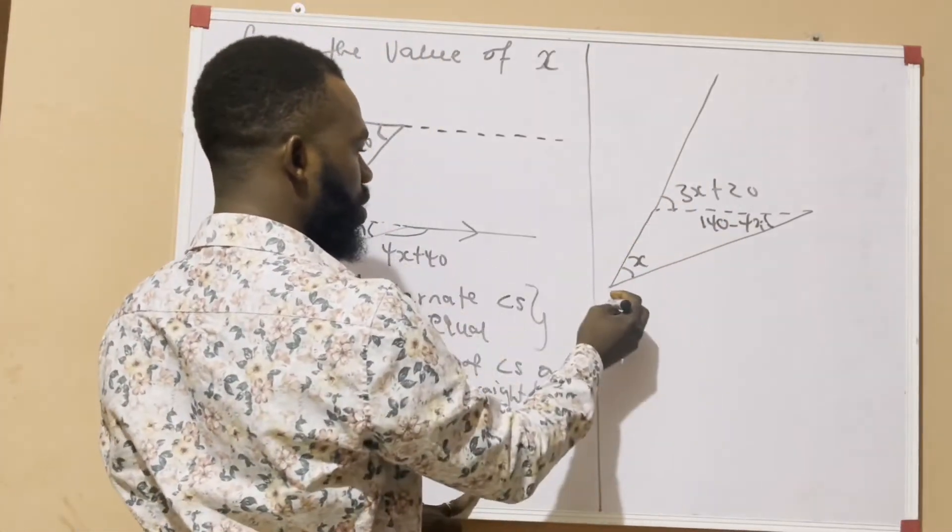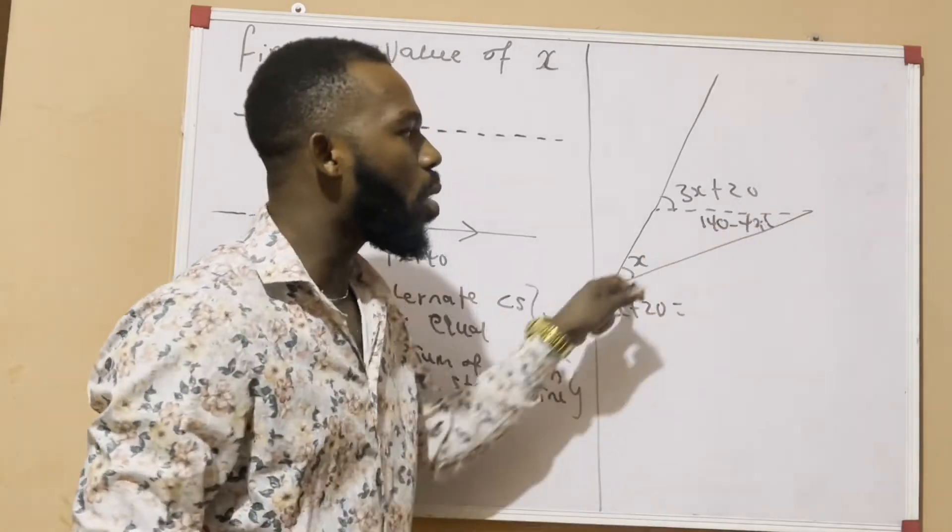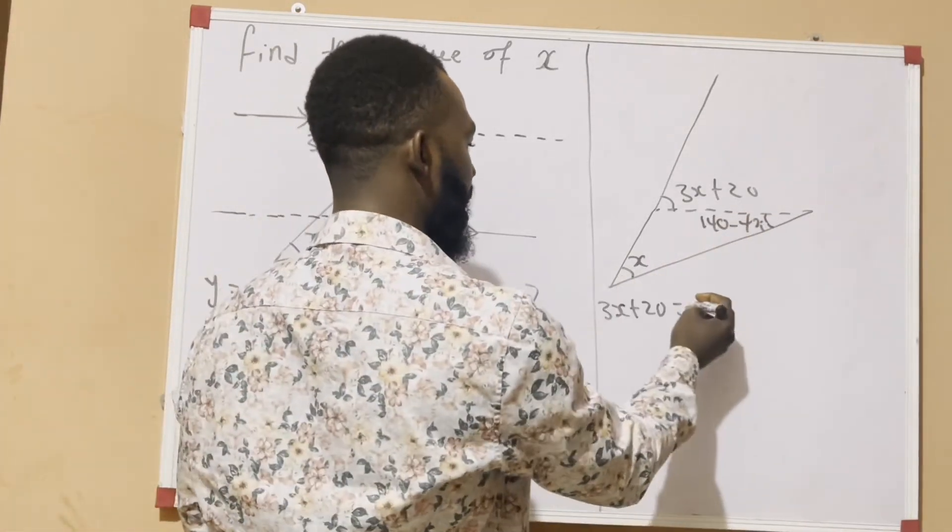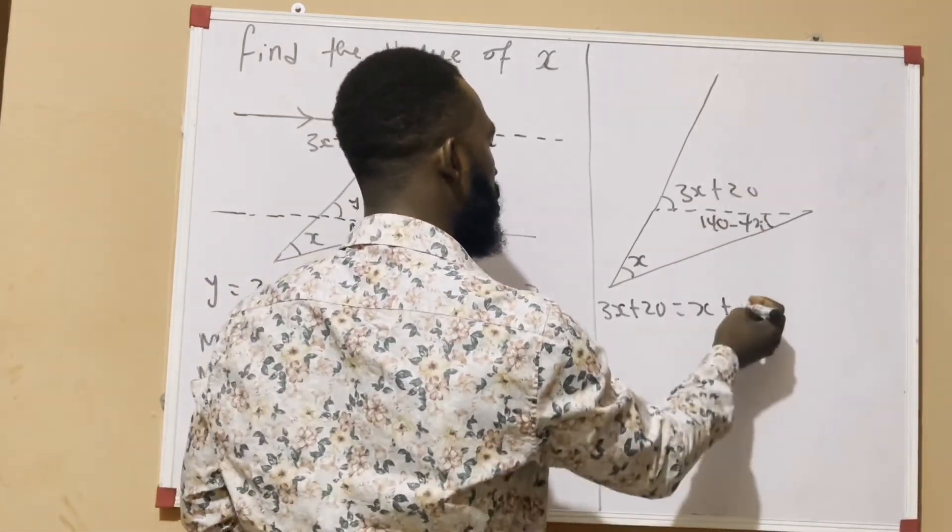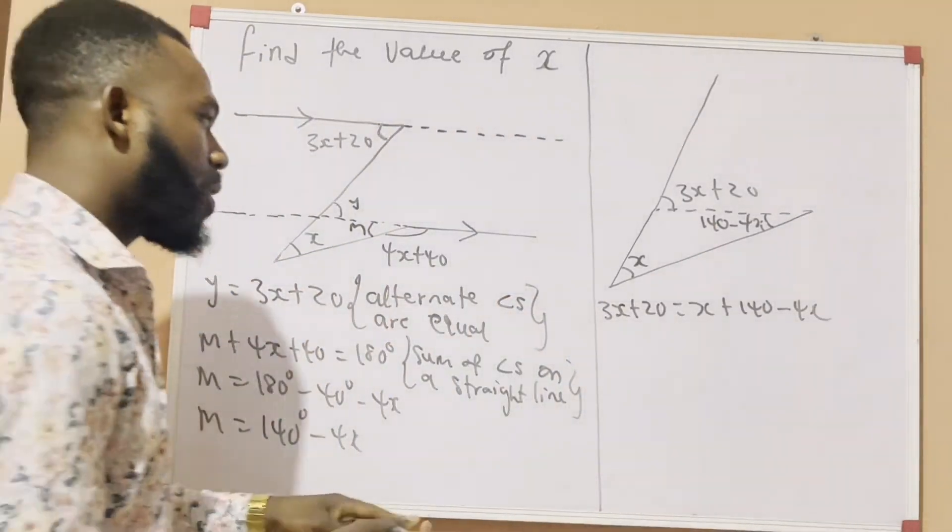So, the exterior angle now, which is 3x plus 20, is equal to the sum of the interior angles, which are x plus 140 minus 4x. All right. So, here it comes.